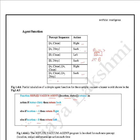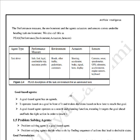The performance measure, the environment, and the agent's actuators and sensors come under the heading of task environment. We follow what is called PEAS: P for Performance, E for Environment, A for Actuators, and S for Sensors.